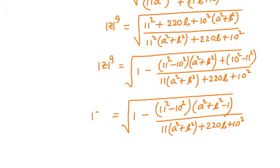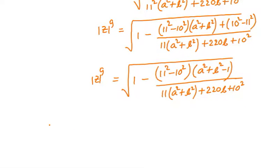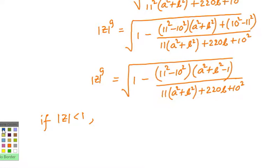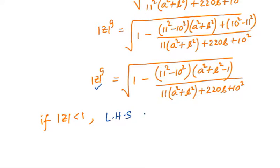From this step we get a contradiction. If we consider modulus of z to be less than 1, then the LHS — which is modulus of z to the power 9 — will also be less than 1.